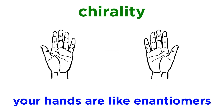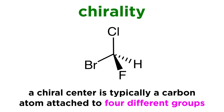Your hands can also be thought of as having an enantiomeric relationship, since they are mirror images of each other. In the context of molecules, this will result from a particular carbon atom being bound to four different groups.